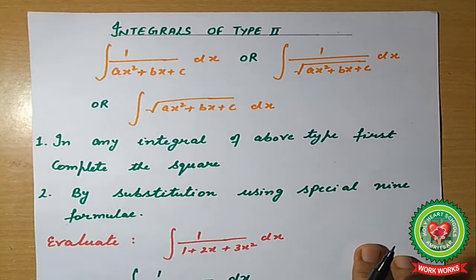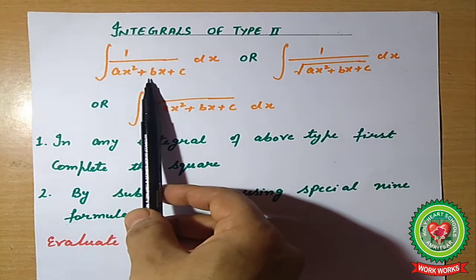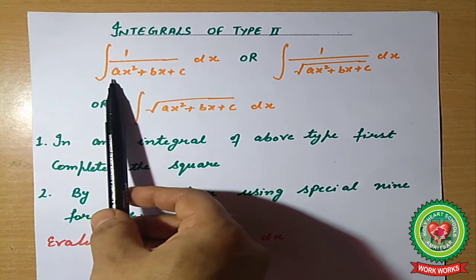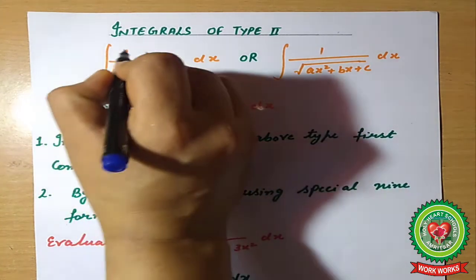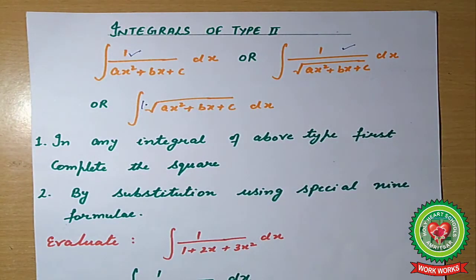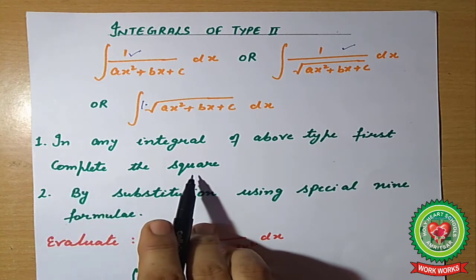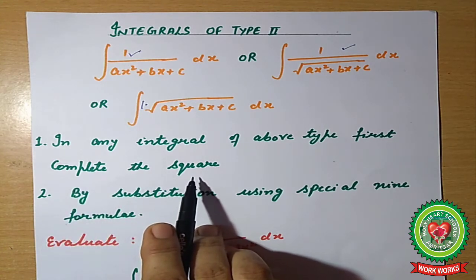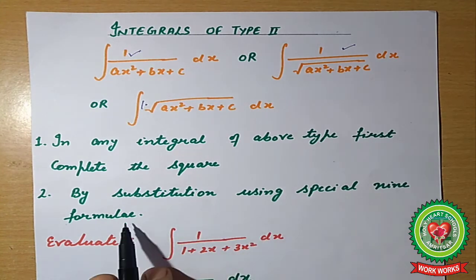This completes the first type of integral. Now we will discuss the second type. In Type 2 integrals, we have 1 in the numerator and a quadratic in the denominator. The quadratic may appear under a square root or in a product form. To solve, we first complete the square using the completing square method from Class 11, then apply substitution and the 9 special formulas.